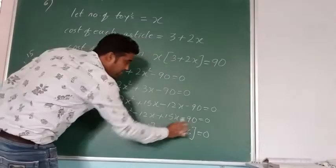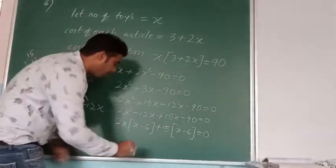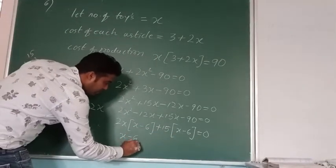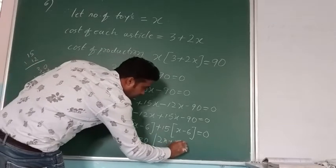Then see, in this we can easily take common as plus 15. Now, these two are same. Write one type: x minus 6 equals 0 and 2x plus 15 equals 0.